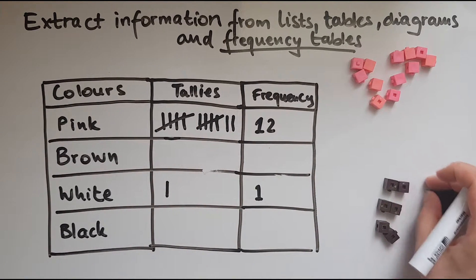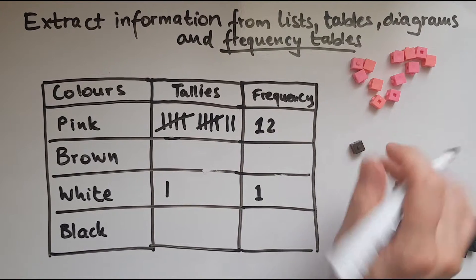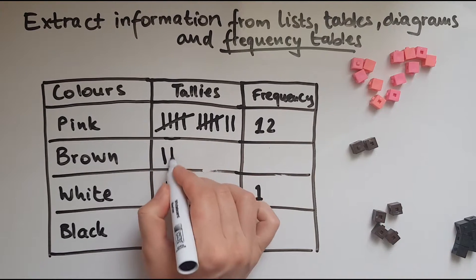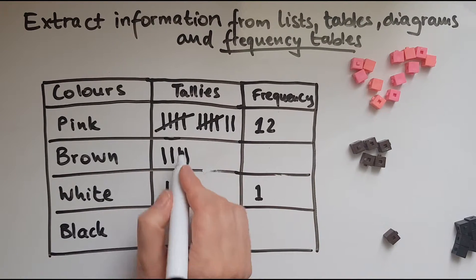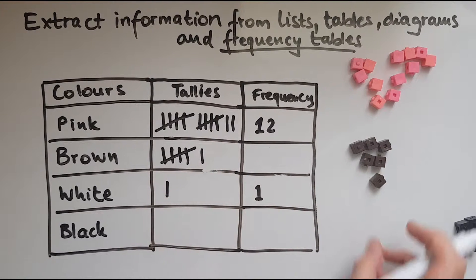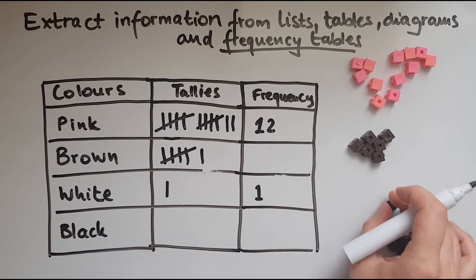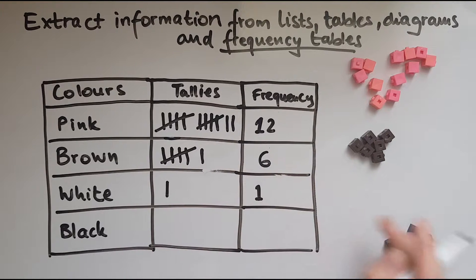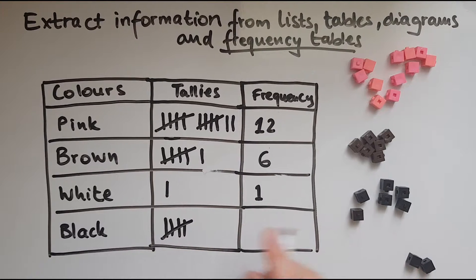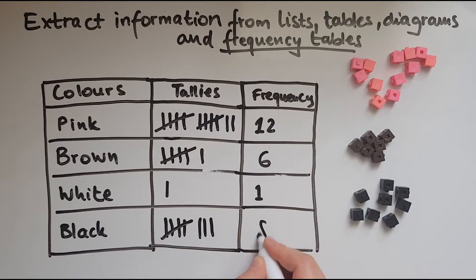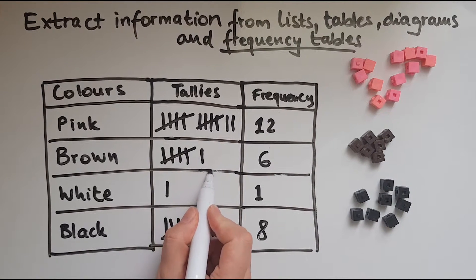Then brown. And black. So brown was five and one, six. Black is one, and another one, another one, fourth, fifth, sixth, seventh, eighth.